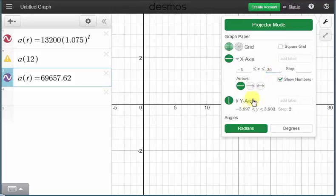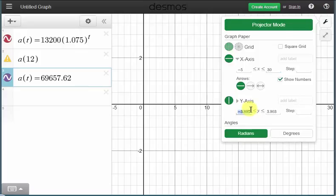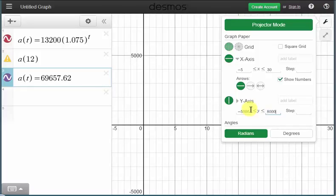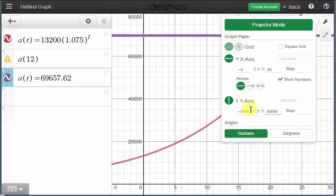Now we also need to change the vertical axis or the y-axis. Remember the y-maximum must be higher than this constant value here. So let's change the y-axis to go from negative 5,000 to 80,000. And notice as soon as we do this, we can actually see the two graphs on the screen. So let's close this.